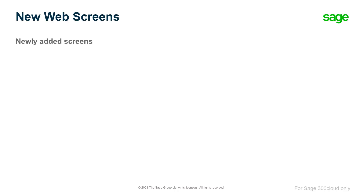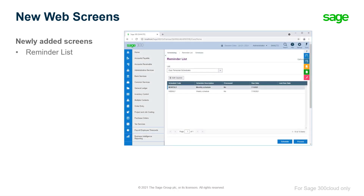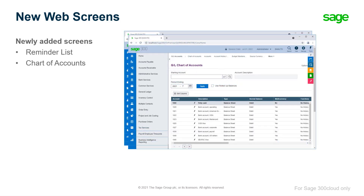New web screens have been added to increase utility on our quest to achieve parity with desktop screens. The following web screens are now available: a new reminder list web screen to remind users to process scheduled tasks, a new chart of accounts web screen for general ledger to list accounts and view specific information for each account.